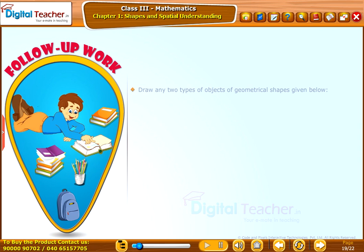Follow up work: Draw any two types of objects of geometrical shapes given below: triangle, square, rectangle, octagon, circle.